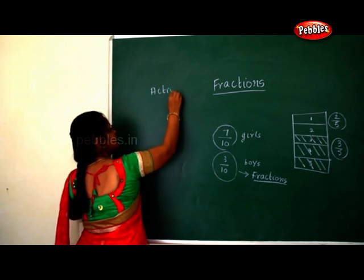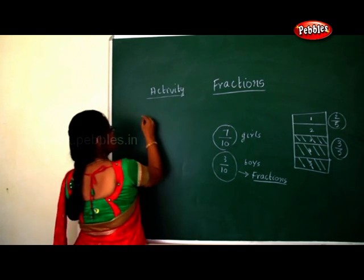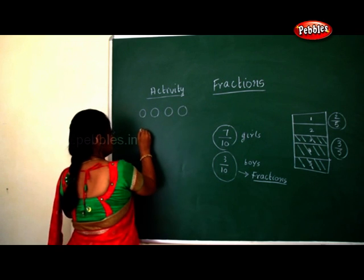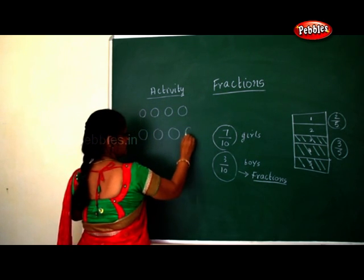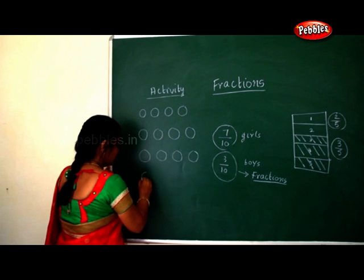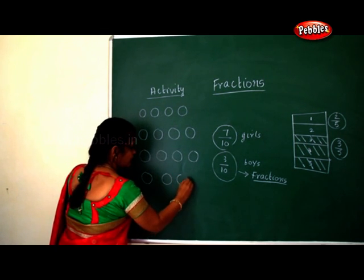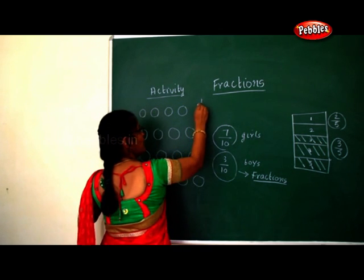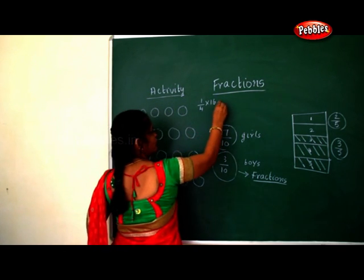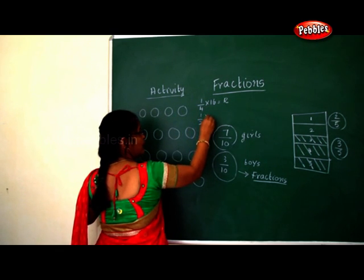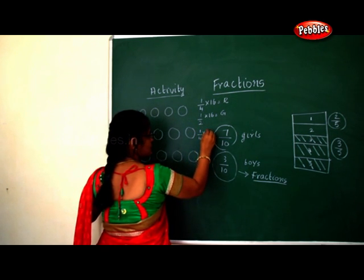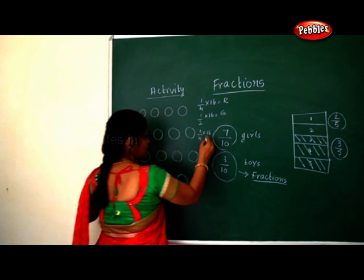There is one activity we can do in class now. I will draw sixteen circles. So now what you have to do: one by four of sixteen circles you have to color with red, one by two — that is half of sixteen — you have to color with green, and one by four of sixteen again you color with blue.